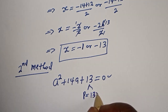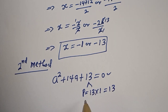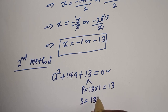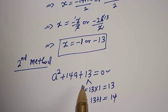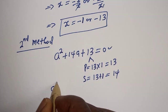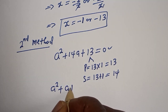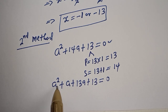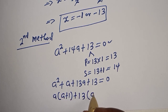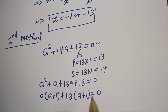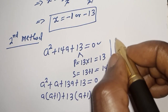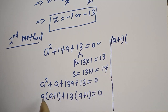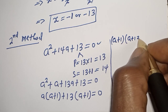The product is 13 multiplied by 1, which equals 13, and the sum is 13 plus 1, which is 14. Now let's replace: we have a squared plus a plus 13a plus 13 is equal to zero. Then a is common in the first pair: a(a plus 1), and 13 is common in the second pair: 13(a plus 1) is equal to zero.